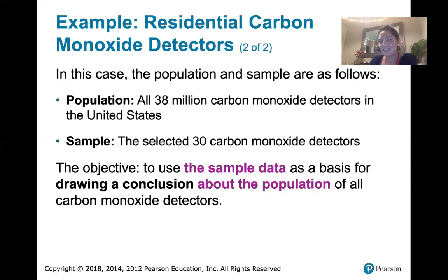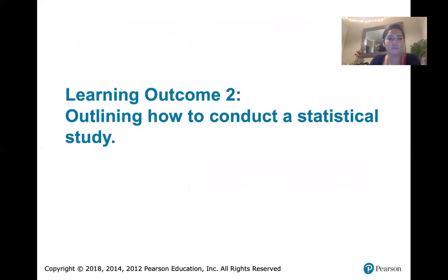Maybe the results about that subset of 30 could tell us something about the 38 million. We need to compute some statistics and see if the results from that sample of 30 can really tell us something about all 38 million carbon monoxide detectors. That's it for unit one, lesson one, learning outcome number one. I'll see you in the next video.